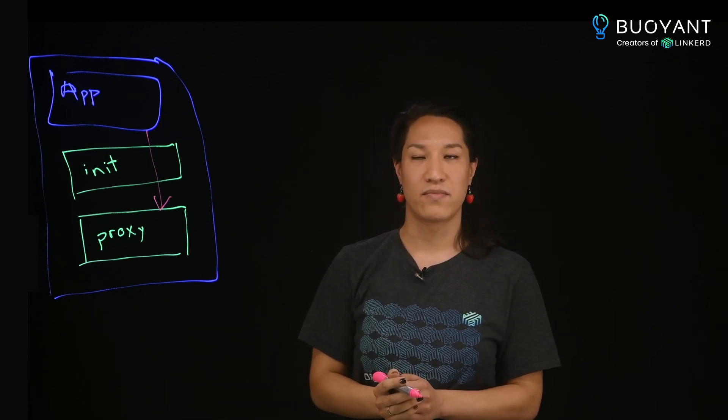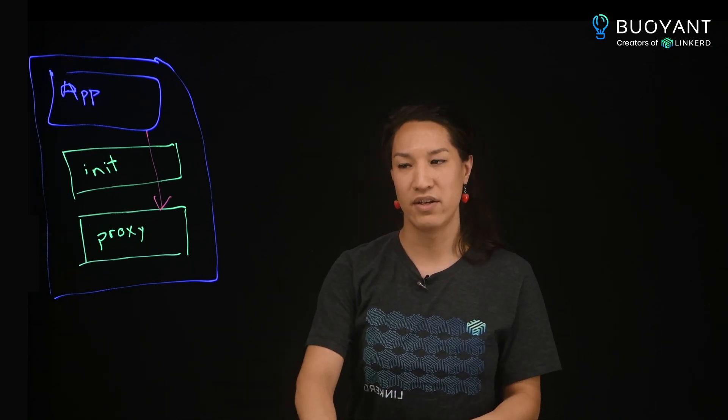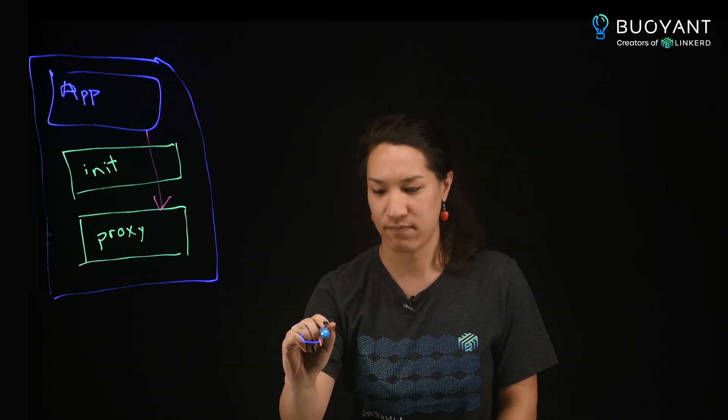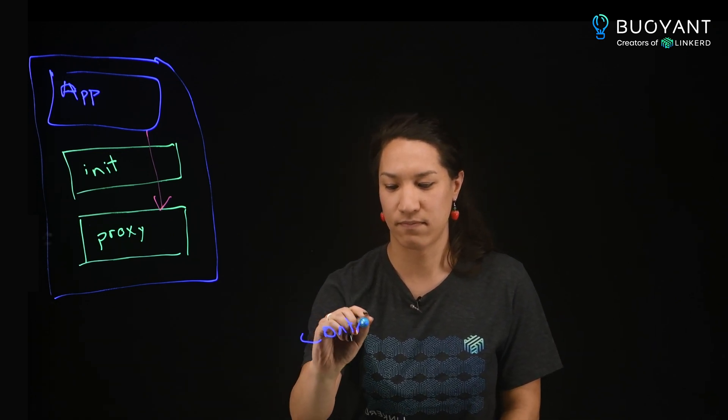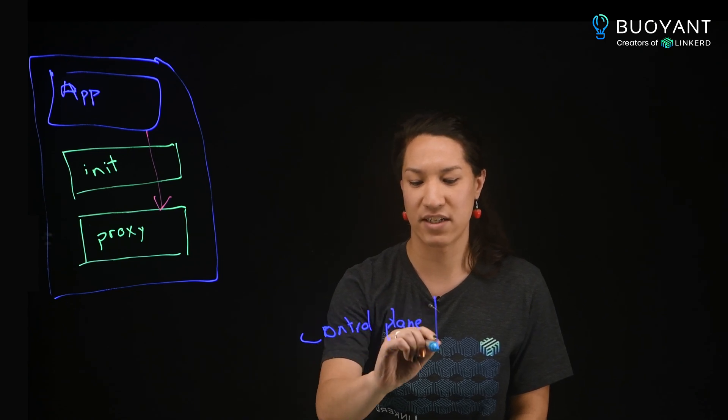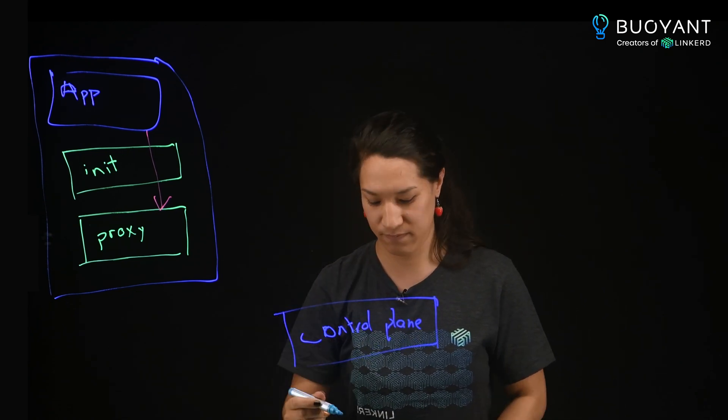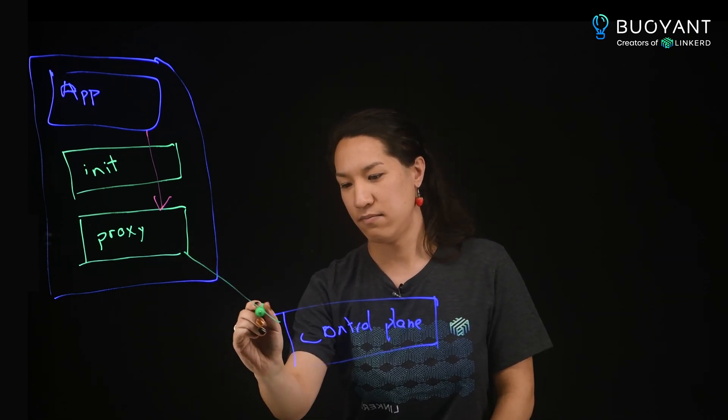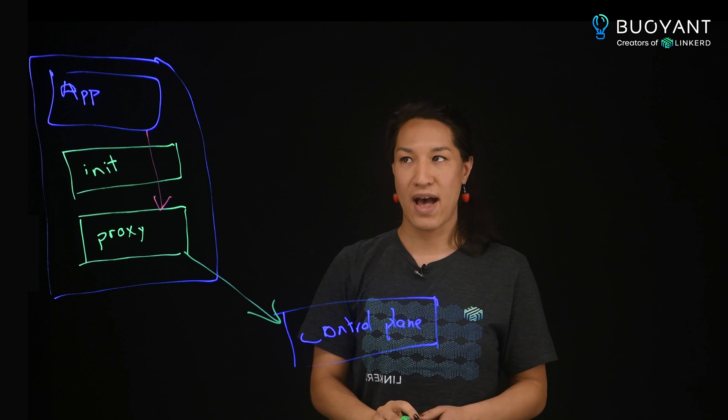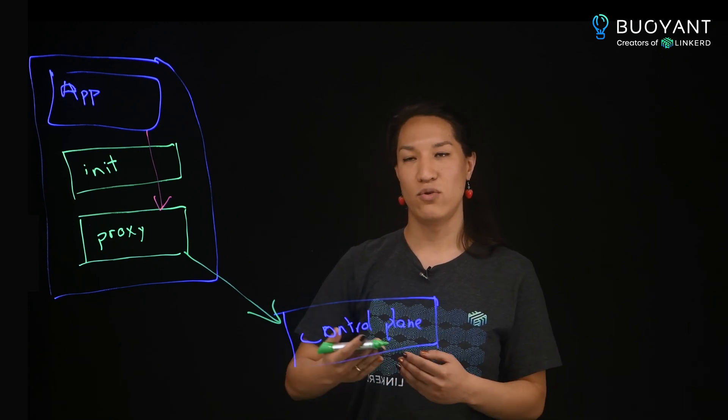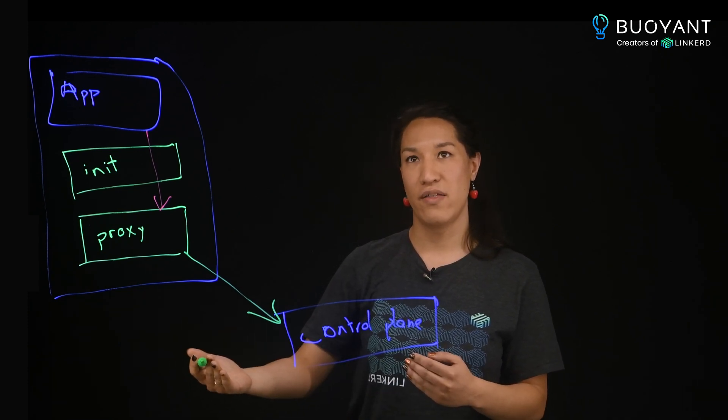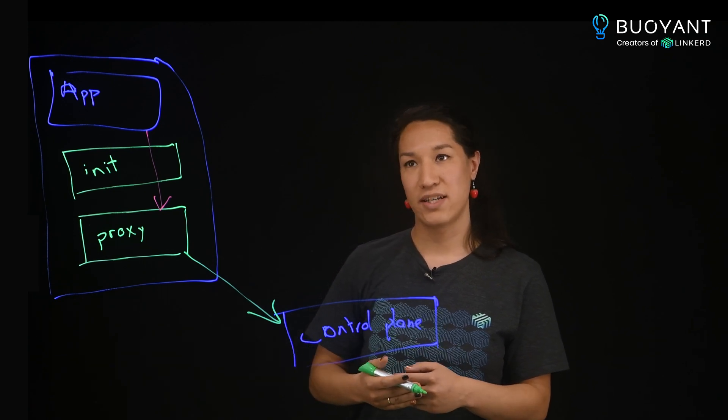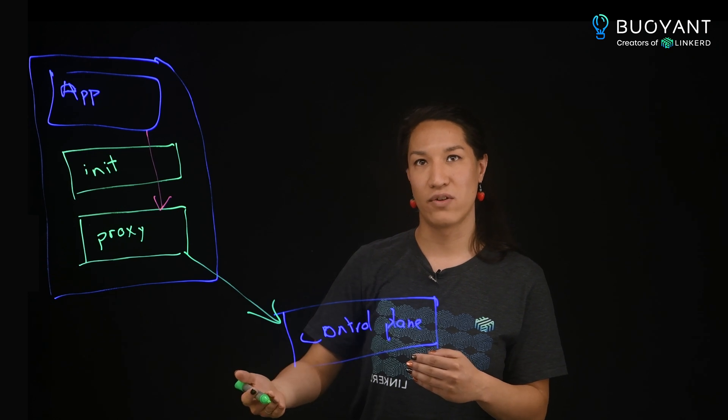When the proxy gets that connection, it's going to do a lookup to the control plane to know where that connection is supposed to go—specifically, the destination controller in the control plane. That will get back whatever service you're connecting to; it's going to give you back a list of endpoints that are the endpoints of that service. The proxy can take that list of endpoints and do intelligent load balancing over them.